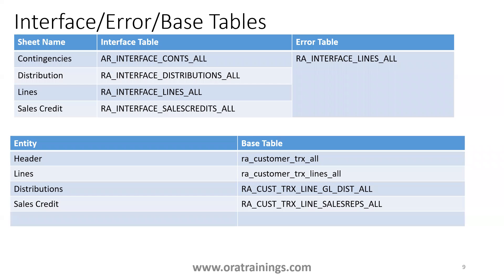These are the details of the interface, error, and base tables, which are very important when working with FBDI. Always get detailed information about the interface and error tables because the execution report may not have full information. For large data sets — say 10,000 invoices where 2,000 fail — you can't scroll through a PDF to find failures. That's why you always need to understand the interface error table to get the real information.